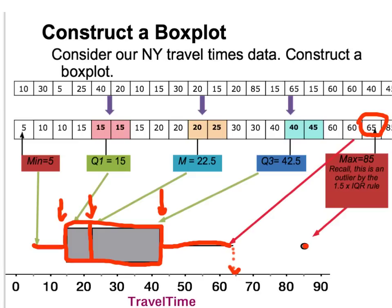Once you have the five-number summary, you use that to make your box plot values. Hopefully you've seen this before, so it's not something entirely new.